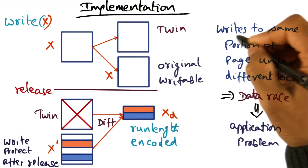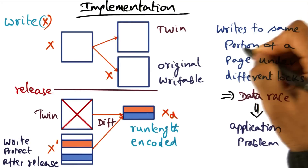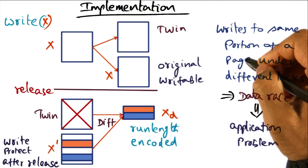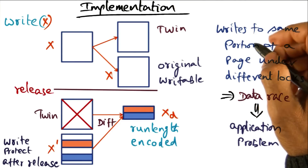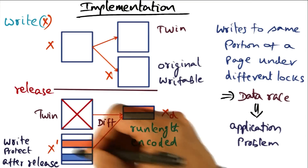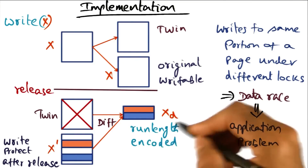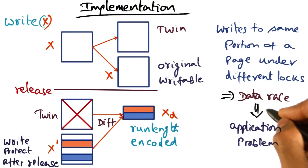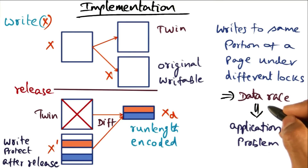If writes are happening to the same portion of a page under different locks, that's the user's problem — that's a data race. That's not the problem of the DSM software. It's an application problem because it represents a data race that should not have been there if the application is constructed correctly.